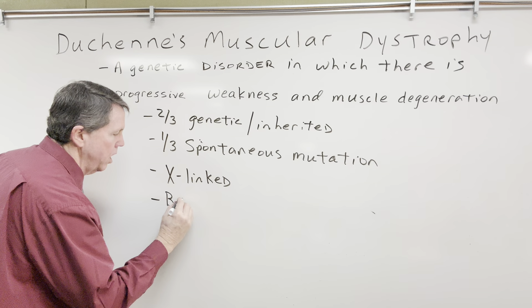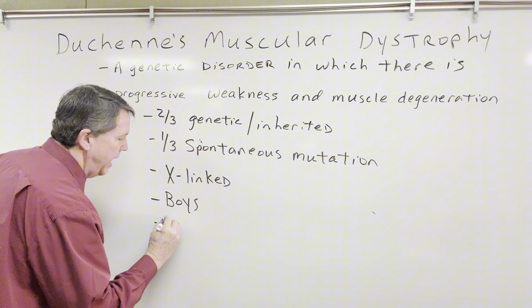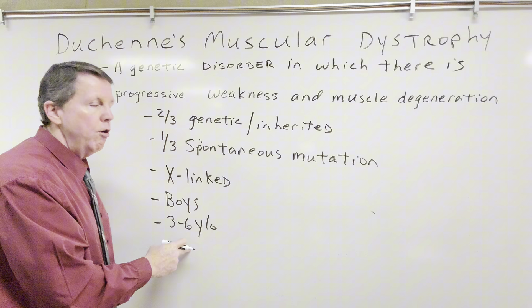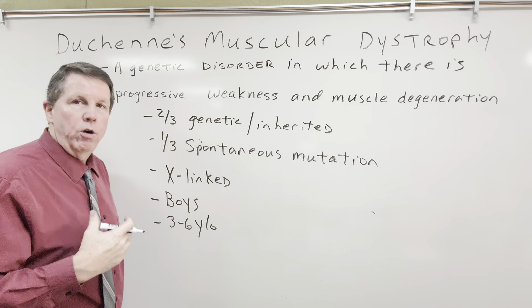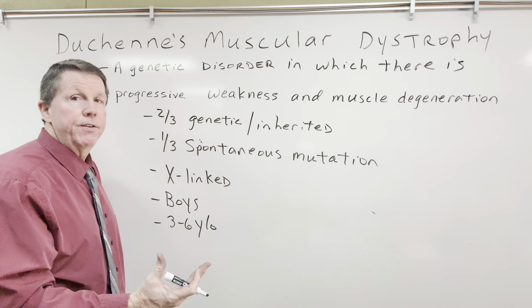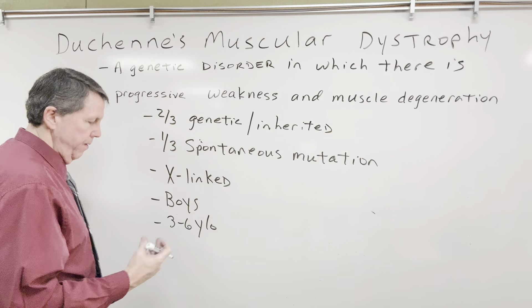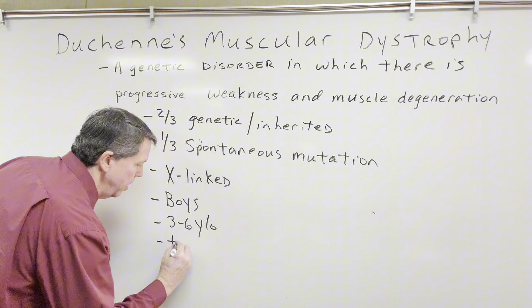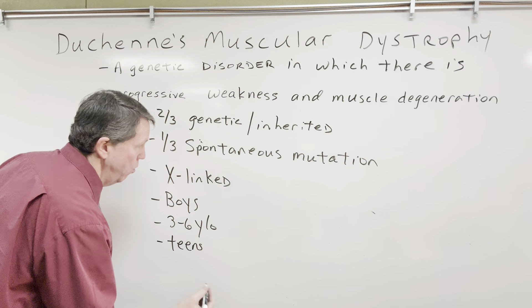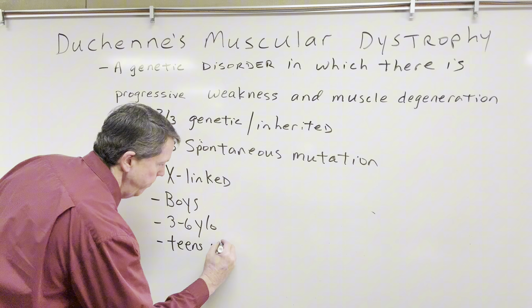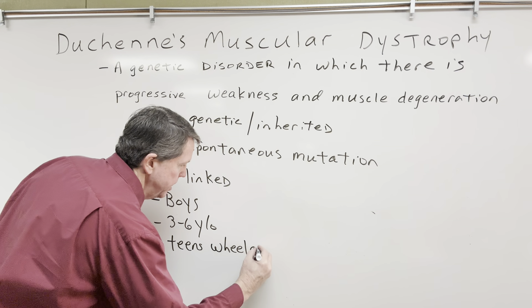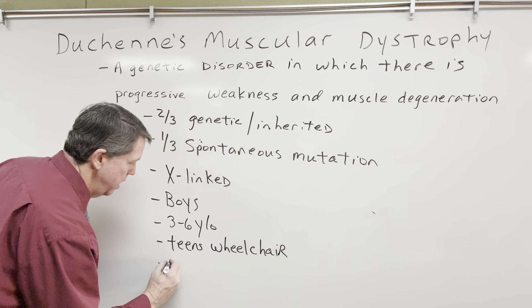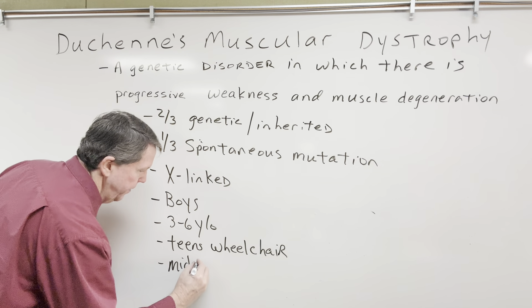Because it's X-linked, it's more common in boys. Normally it's diagnosed between the ages of three and six years old. Parents will notice the child has been falling down or having difficulty walking upstairs. Normally by the teens, these boys are in wheelchairs, and unfortunately by the mid-twenties, death usually occurs.